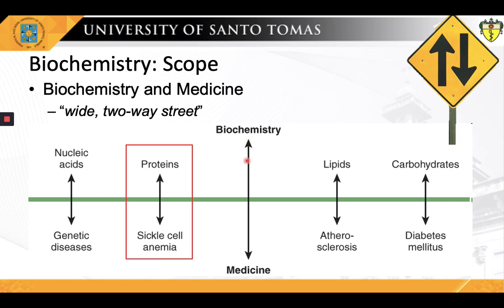This interrelationship of biochemistry and medicine is a wide, two-way street. Biochemical studies have illuminated many aspects of health and disease, and conversely, the study of various aspects of health and disease has opened up new areas of biochemistry. We can see many examples of this two-way street. Knowledge of biochemical molecules has clarified our understanding of diseases, and conversely, analyses of those diseases have cast light on many areas of biochemistry.